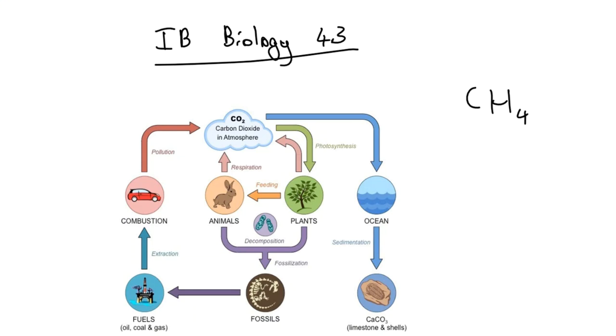Carbon can also exist in the form of methane, which is formed by methanogens, which are anaerobic bacteria that live in the stomachs of cows and other agricultural animals, livestock.